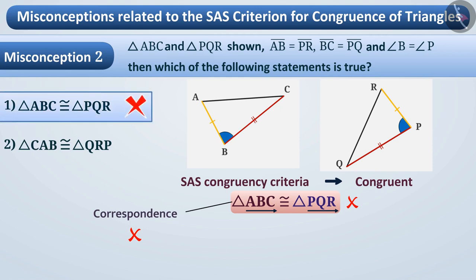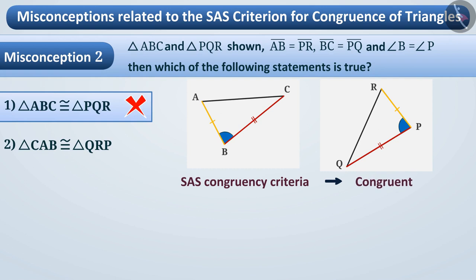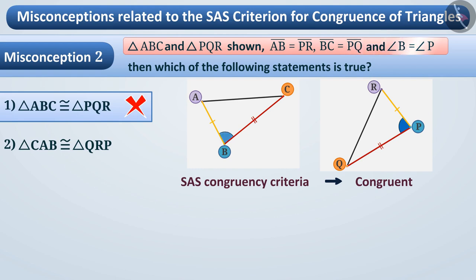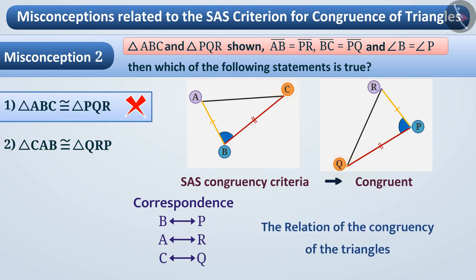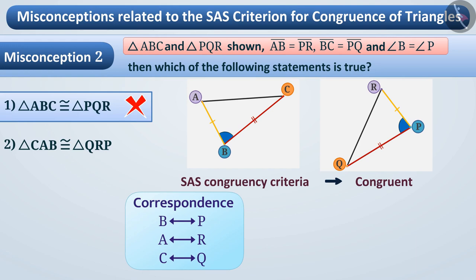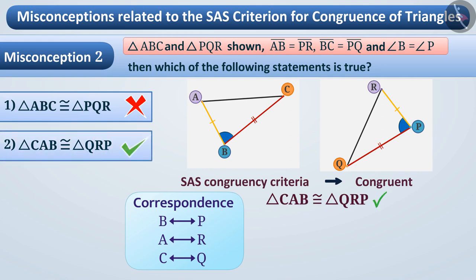Option 1 is the wrong answer. The correct understanding is that both triangles are congruent only when B corresponds to P, A corresponds to R, and C corresponds to Q. As given in the question, AB equals PR, BC equals PQ, and angle B equals angle P. This correspondence can be established: B equals P, A equals R, and C equals Q. The relation of congruency is indicated by taking this correspondence into consideration. So we can write triangle CAB is congruent to triangle QRP, and the correct answer is option 2.